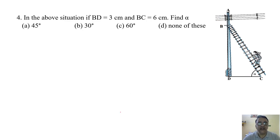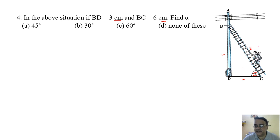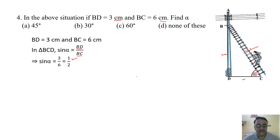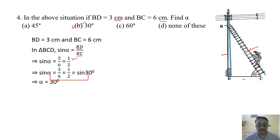Question 4: In the above situation, if BD = 3 cm and BC = 6 cm, find alpha. Since opposite and hypotenuse are given, we use sin: sin α = BD/BC = 3/6 = 1/2. Since sin 30° = 1/2, we compare and get alpha = 30 degrees. The correct option is option C.